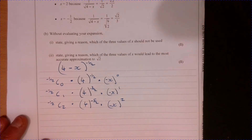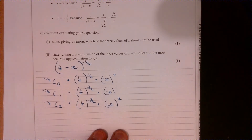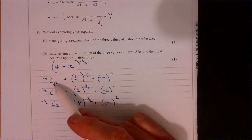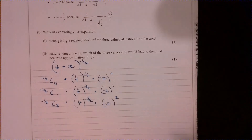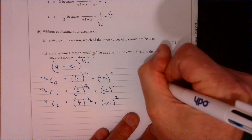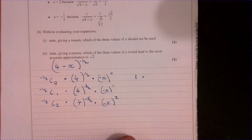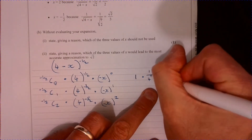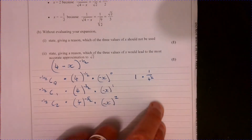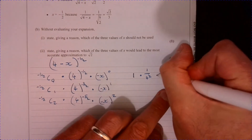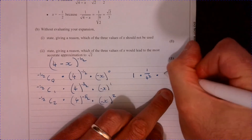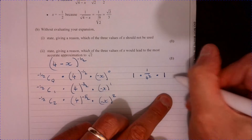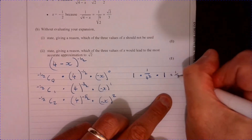Let's go through and fill in all of the easy bits first of all. Anything C zero is one, so let's put that in. Four to the minus a half — that's just one over four to the half — and of course that's one over two. Then I'm going to multiply that by one. So that top line is just a half.